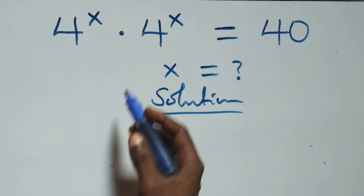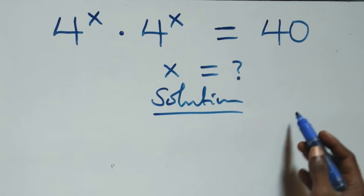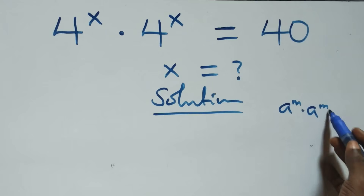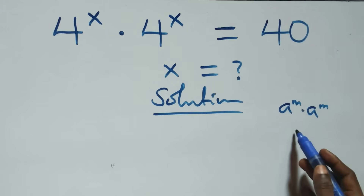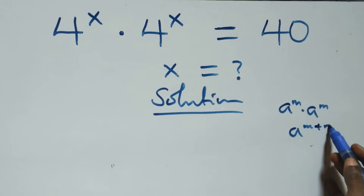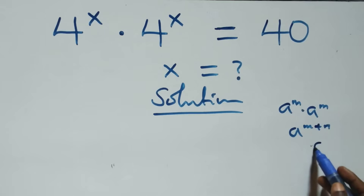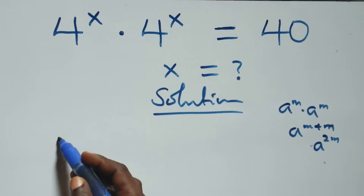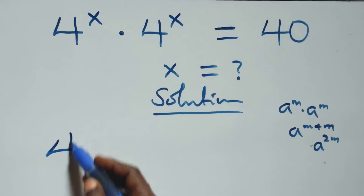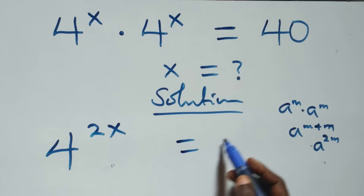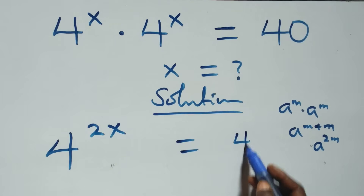What we have here: this follows when we have a raised to power m times a raised to power m — we have the same base, so we can add the powers as a raised to power m plus m, which is the same as a raised to power 2m. That is, what we have here becomes 4 raised to power 2x equals to 40 on this side.